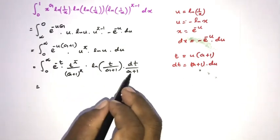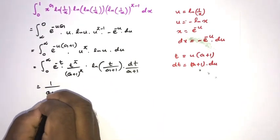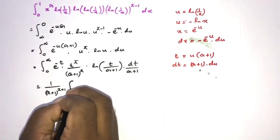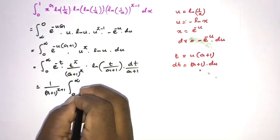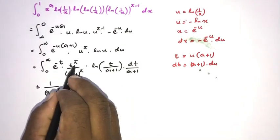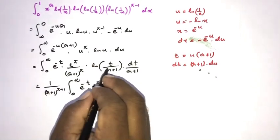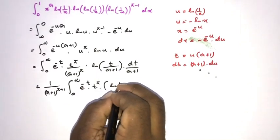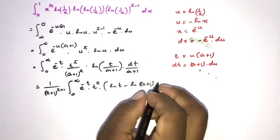The factor (g plus 1) raised to the pi is a constant, and there's also one over (g plus 1) from the du substitution, so we can write 1 over (g plus 1) raised to pi plus 1 outside the integral. Inside we have e to the minus t times t to the pi.